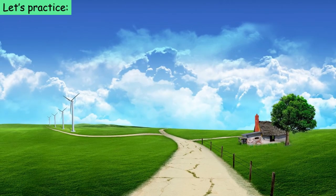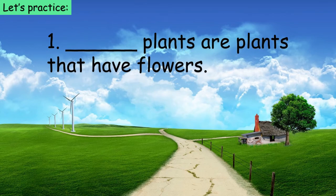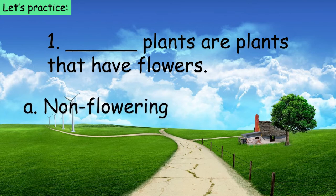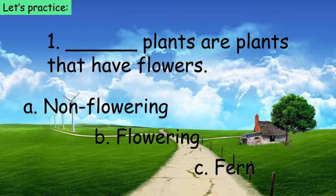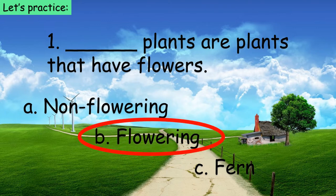Let's practice, students. Read slowly: blank plants are plants that have flowers. Choose your answer — letter A, B, or C. The correct answer is letter B. Flowering plants are plants that have flowers. Very good!